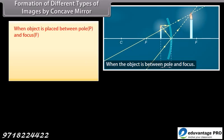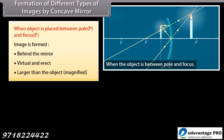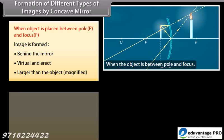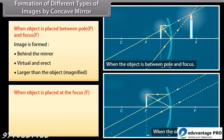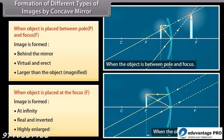Formation of different types of images by concave mirror. When the object is placed between pole P and focus F, the image is formed behind the mirror — virtual and erect, and larger than the object (magnified). When the object is placed at the focus F, the image is formed at infinity — real and inverted, and highly enlarged.